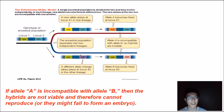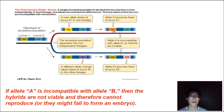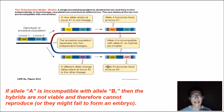In the second population, something different happens. The locus one stays little a, little a, but locus two, which was originally little b, little b, now becomes big B, little b. A different allele change takes place at locus two. Over time the big A allele becomes fixed in population one, and the big B allele becomes fixed at locus two in population two.